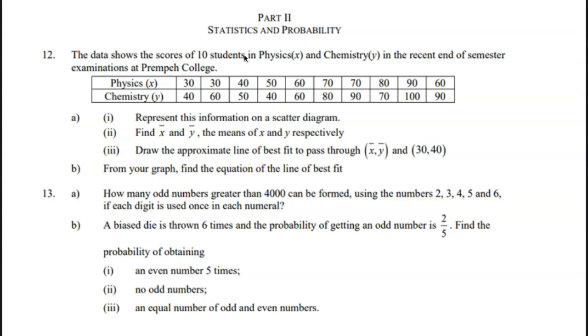Part B: A biased die is thrown 6 times and the probability of getting an odd number is 2/5. Find the probability of obtaining i, an even number 5 times, ii, no odd numbers, iii, an equal number of odd and even numbers.